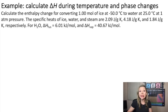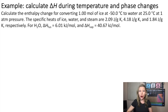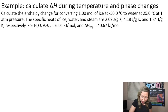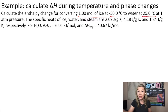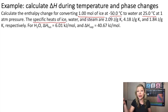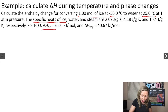Let's do an example on calculating the enthalpy change during temperature and phase changes. We need to calculate the enthalpy change when converting one mole of ice at minus 50 degrees Celsius to water at 25 degrees Celsius and 1 atm pressure. We are given the specific heats of ice, water, and steam, and also the delta H of fusion and delta H of vaporization.